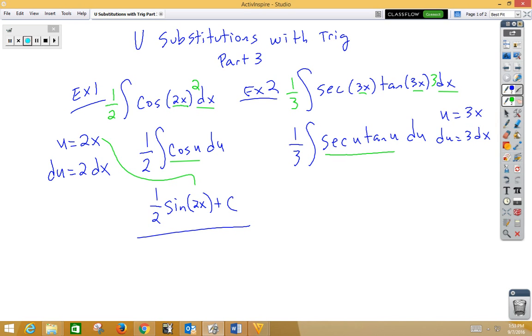We recognize secant u tangent u as being secant. So that would be 1 third secant. Now, it's not really u. Remember, u is 3x, so we're going to put a 3x plus c.